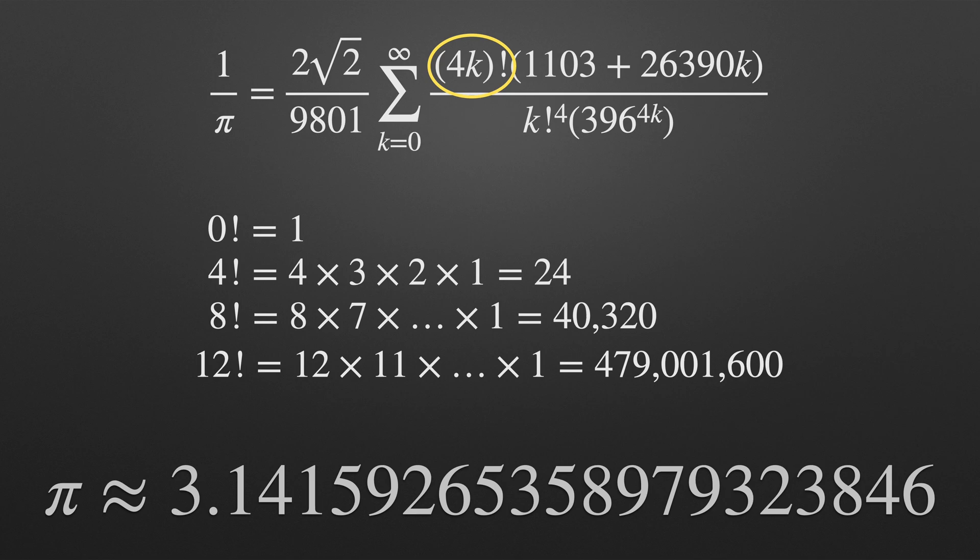By the fourth iteration we're at 12 factorial with a value of 479,001,600. So yeah pretty big numbers. Now luckily we wouldn't have to iterate this formula too far for the result we need but wouldn't it be so much better and bear with me here if there was some sort of magic tap where you turn it on and the digits of pi come flowing out digit by digit one at a time.